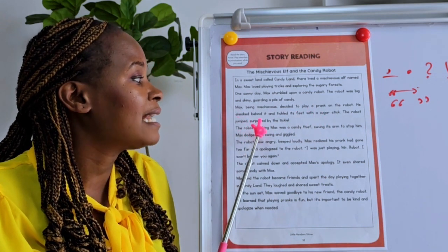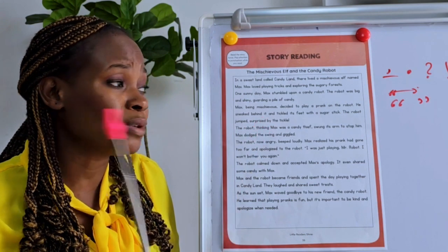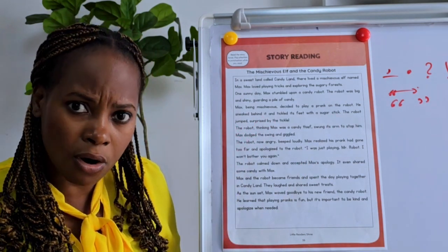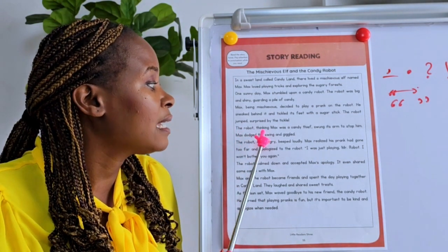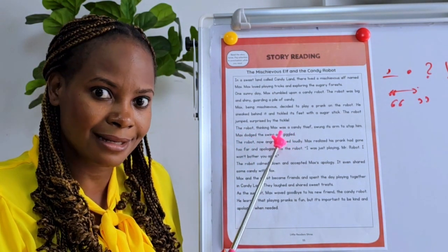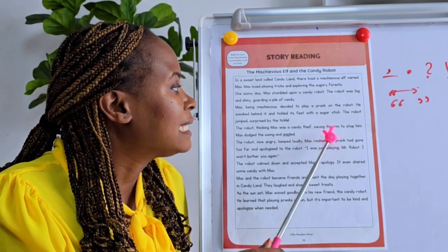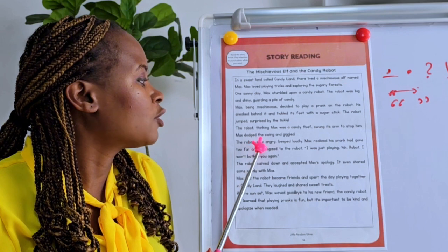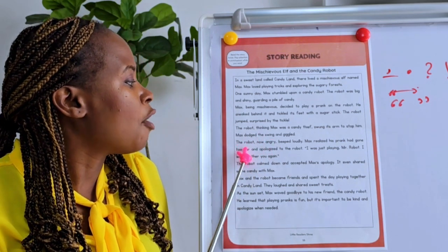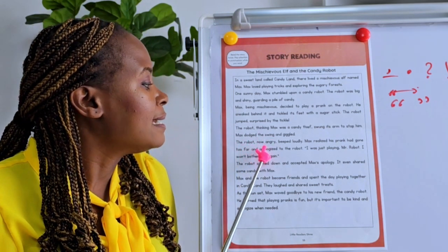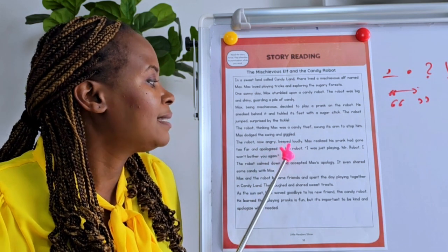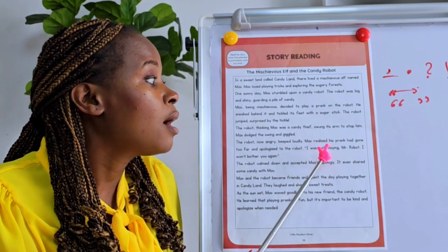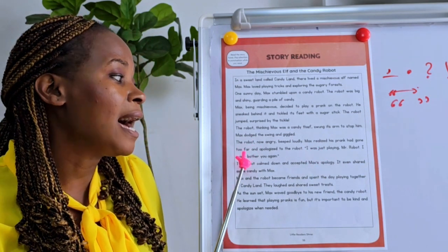He sneaked behind it and tickled its feet with a sugar stick. The robot jumped, surprised by the tickle. The robot, thinking Max was a candy thief, swung its arm to stop him. Max dodged the swing and jiggled the robot. The robot, now angry, barked loudly. Max realized his prank had gone too far and apologized to the robot.